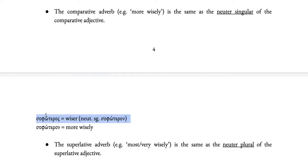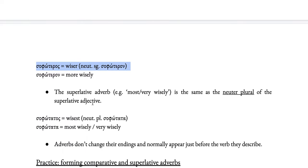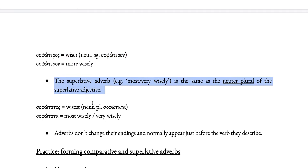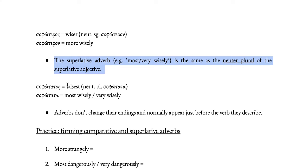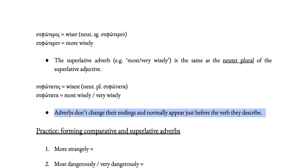For example, to say more wisely: take the comparative adjective sophoteros, put it in the neuter singular — sophoteron — and that is also the comparative adverb meaning more wisely. The superlative adverb — most wisely or very wisely — is the same as the neuter plural of the superlative adjective. To say most wisely: take wisest, that's sophotatos, take the neuter plural — sophotata — and that gives you the superlative adverb. The good news about adverbs is that there are no endings — the adverb is always the same and doesn't change depending on gender, case, or person.